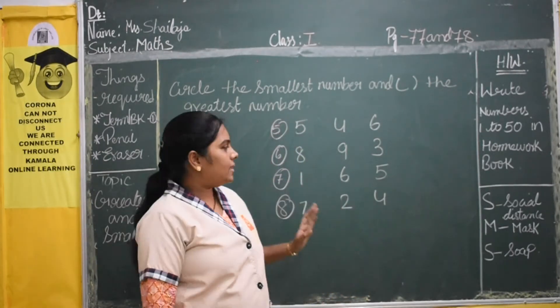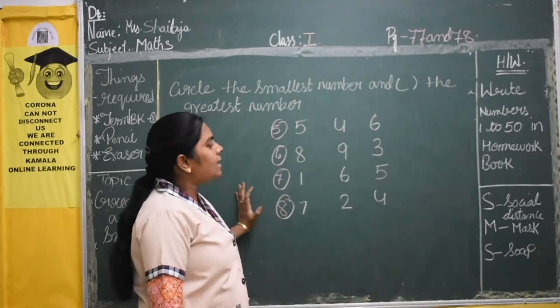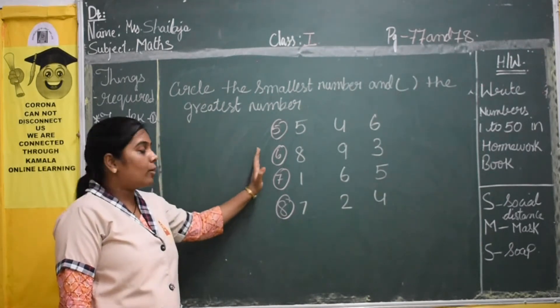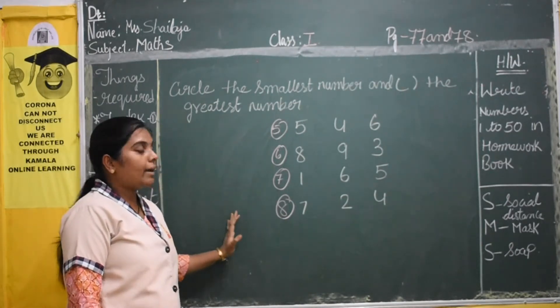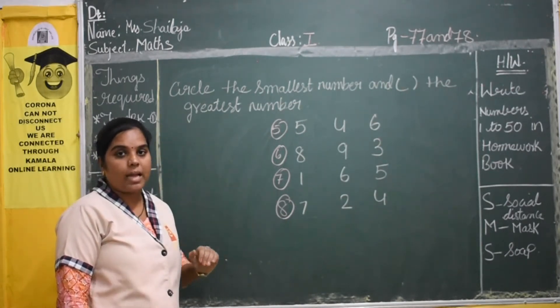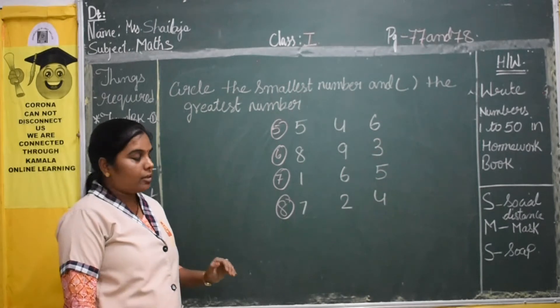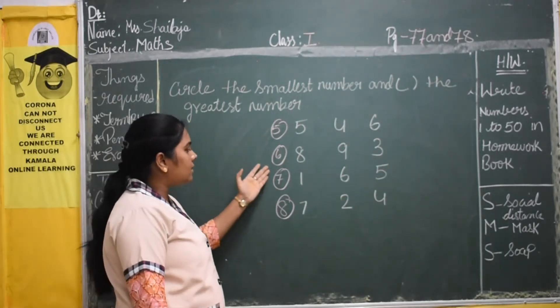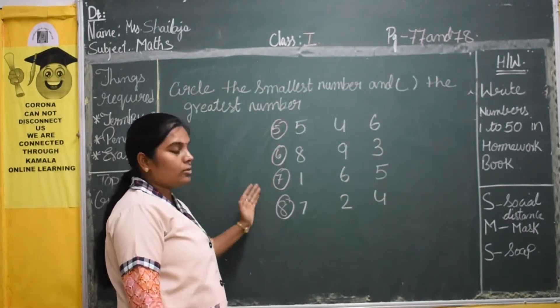Should I start the class? Yes. So in last class, we did only number 4. In that 4, we'll find out the greatest and smallest. Now we'll continue with 5, 6, 7, 8.